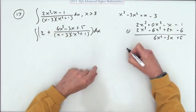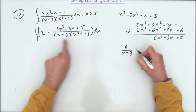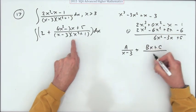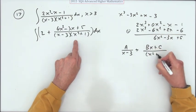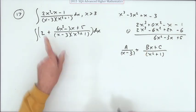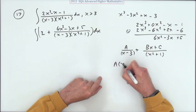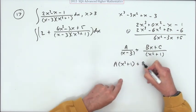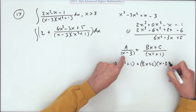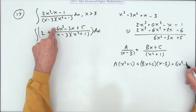Let that be equal to A over x minus 3. Irreducible quadratic here, so make that Bx plus C over x² plus 1. You can have one bracket as well. If you make it equal to that, that means we can say that A times (x² plus 1) plus (Bx plus C) times (x minus 3) should equal the numerator here: 6x² minus 3x plus 5.